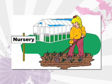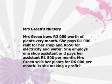Let's look at a few examples — Mrs. Green's Nursery and Mrs. Pink's Nail Boutique. Let's start with Mrs. Green's Nursery. Here's what happens every month: she buys 2,000 Rand worth of plants, pays 1,000 Rand for rent, 650 Rand for electricity and water, and pays her one shop assistant 1,500 Rand per month. If she sells her plants for 6,000 Rand a month, is she making a profit? How do we calculate that?